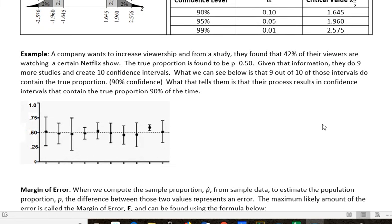Let me show you one example. A company wants to increase viewership, and from a study they found that 42% of their viewers are watching a certain Netflix show. The true proportion is found to be 0.5. They do nine more studies and create 10 confidence intervals. We can see that 9 out of 10 of those intervals do contain the true proportion. Since they've got 9 out of 10, they're 90% confident. What that tells them is that their process results in a confidence interval that contains the true proportion 90% of the time.